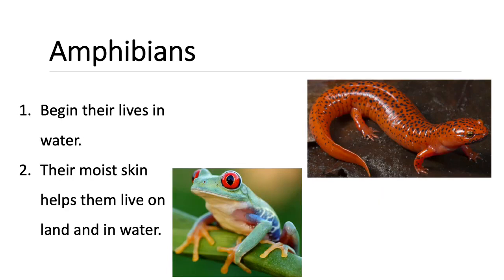Amphibians: an amphibian is an animal with a backbone that can live on both land and water. Most amphibians begin their lives in water. Their moist skin helps them live on land and in water. This is a frog. Frogs have backbones and their skin is moist, which means wet. A frog can live on land and in water.